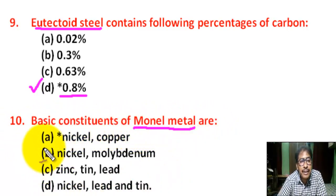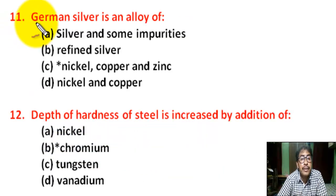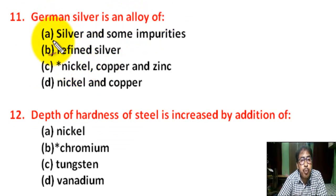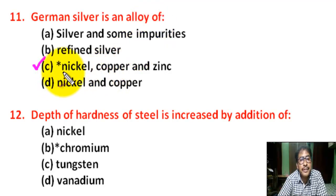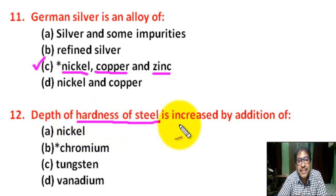Question number ten: basic constituents of monel metal are — correct answer is A — monel metal constituents are nickel and copper. Question number eleven: German silver is an alloy of — correct answer is C — German silver is an alloy of nickel, copper, and zinc.